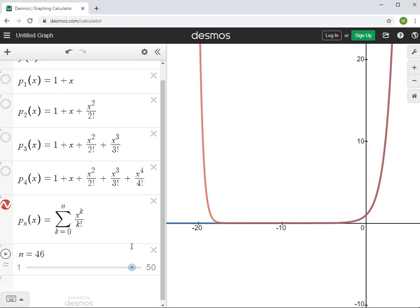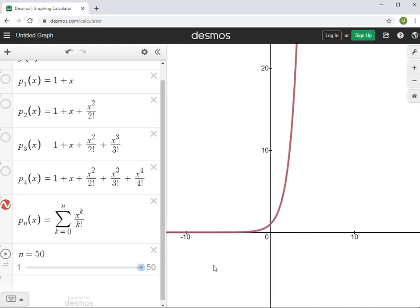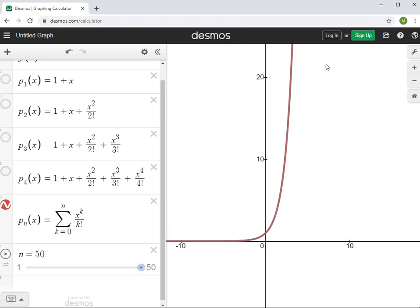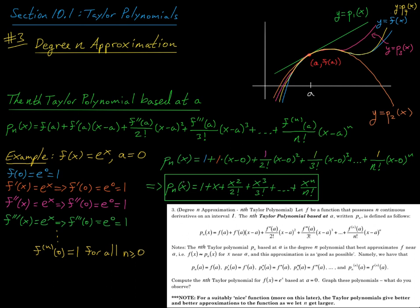The point is that these polynomials are converging to our exponential function. In the next couple of videos we'll make this idea more precise: as we let n — the degree of the Taylor polynomial — increase, we get better and better approximations to our function. That's a good place to stop; I'll see you in the next video, thanks!